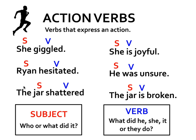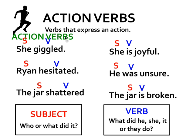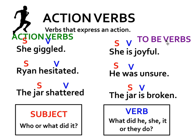These verbs are really different. Giggled, hesitated, and shattered — those are action verbs. Is, was, is — those are to-be verbs. To-be verbs are almost just like the verb for existing: she is, he was, the jar is. This week, our goal is to use verbs like giggled, hesitated, and shattered that really paint a picture for the reader, versus verbs like is, was that don't really.